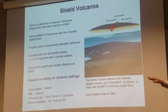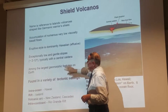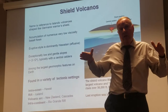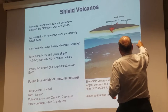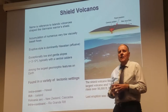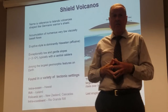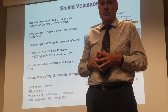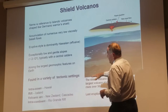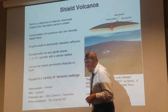The eruptive style is Hawaiian — very gentle slopes, somewhere around two degrees along the margins, and you don't get steeper slopes until very close to the top. Many of these, if not most, also have a central caldera associated with them.